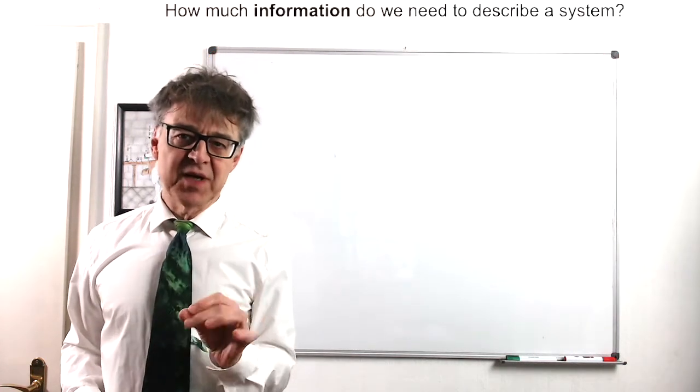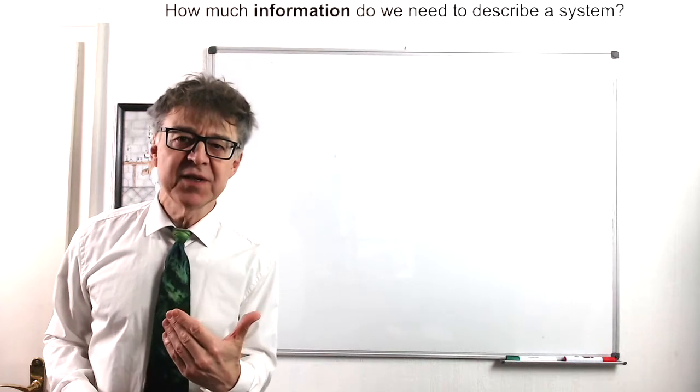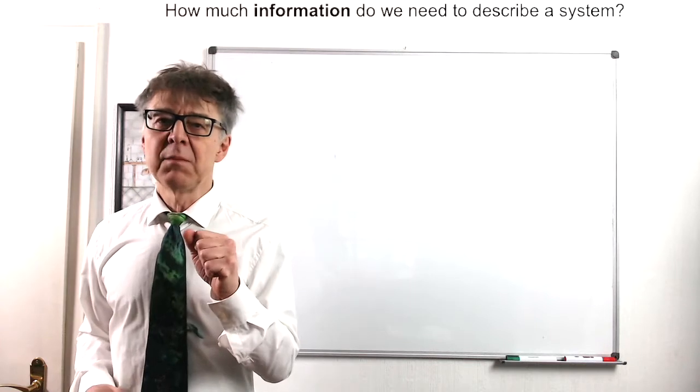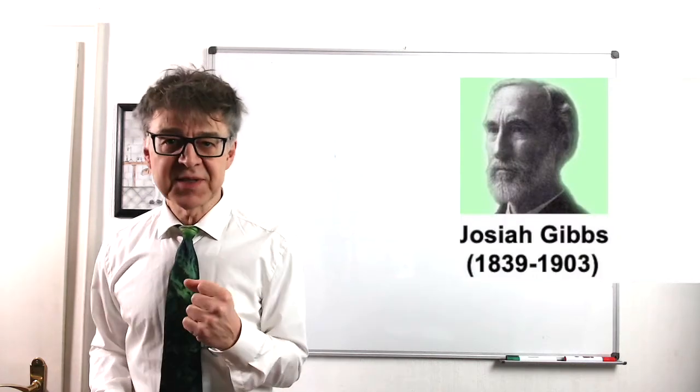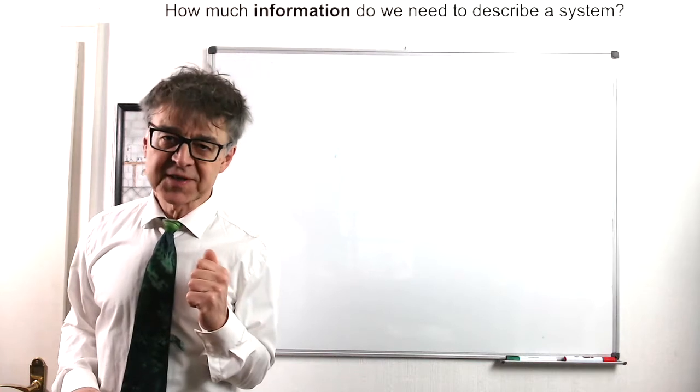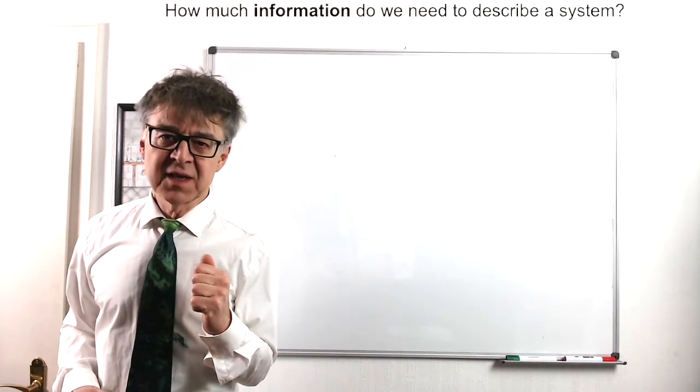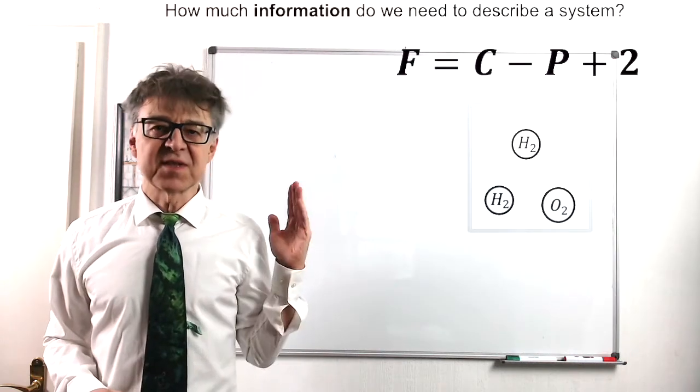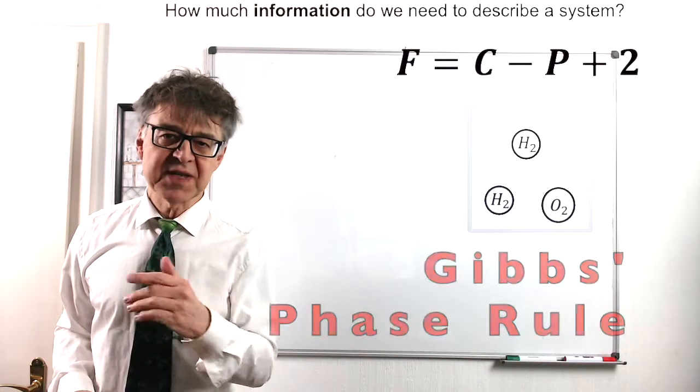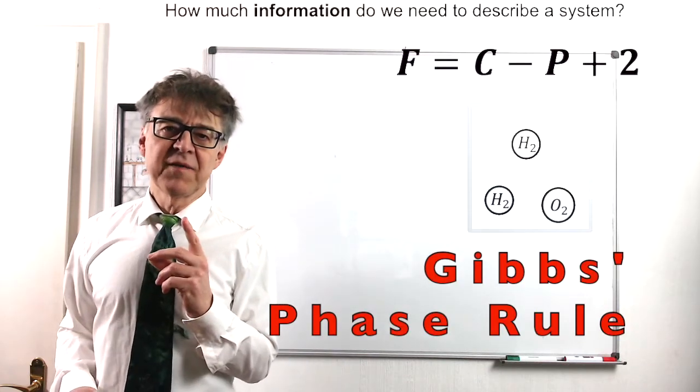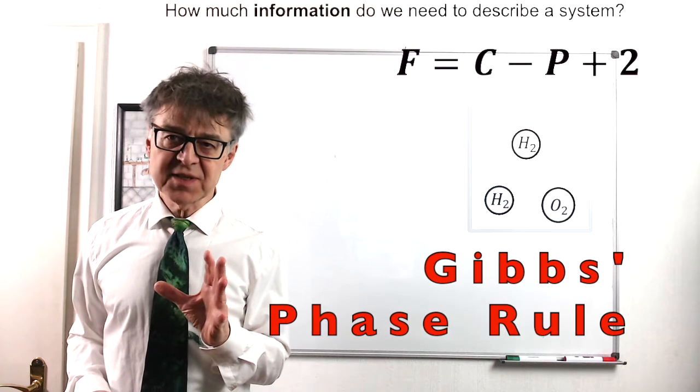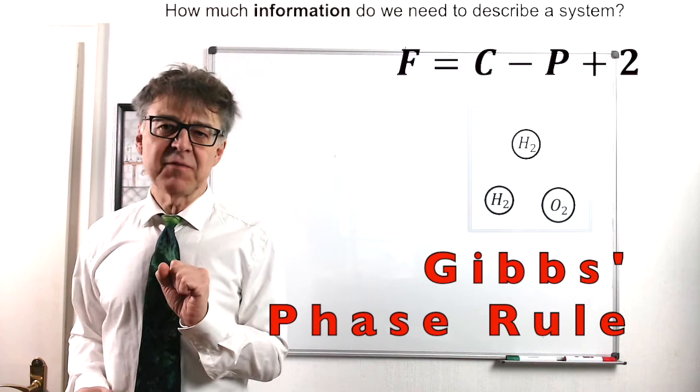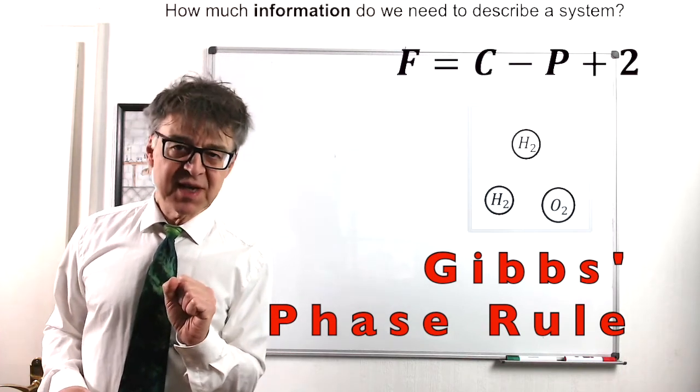How many numbers, how many state properties do we need to describe our system completely? Mr. Gibbs, one of the greatest thermodynamicists of all times, has set up a rule for this. In fact, it is a law, the simplest law of thermodynamics. F equals C minus P plus 2. That's Gibbs phase rule. If the system consists of C components and P phases, then you need exactly F state variables to unambiguously describe the system.